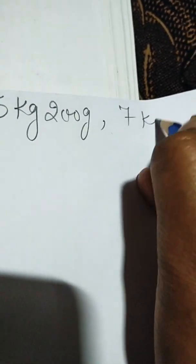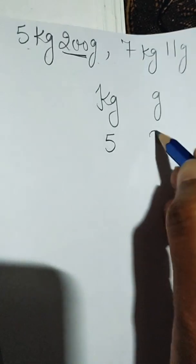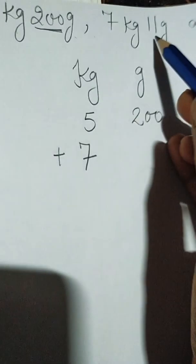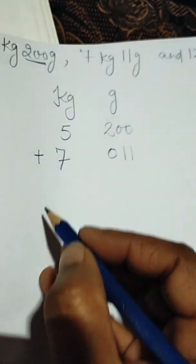Now part E. The statement is 5 kilogram 200 gram, 7 kilogram 11 gram, and 12 kilogram 103 gram. For kilogram and gram, before the gram there must be three digits. If there are not three digits, we complete them by putting zeros before that number. We write kilogram and gram: 5 kilogram 200 gram, 7 kilogram 11 gram — we write 011 to complete three digits.